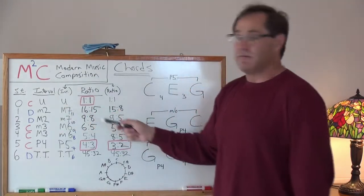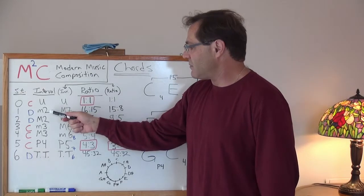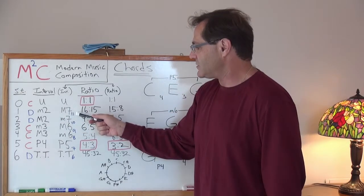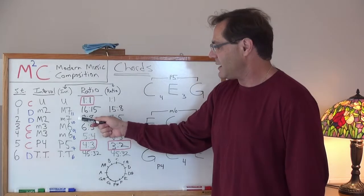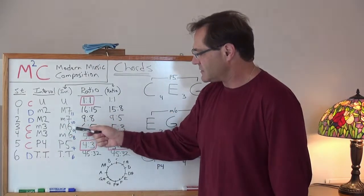Then I write its inversion next to it. The inversion of a minor second is a major seventh. Likewise for a major second, it's a minor seventh. Major third. I'm sorry. Minor third, major sixth.